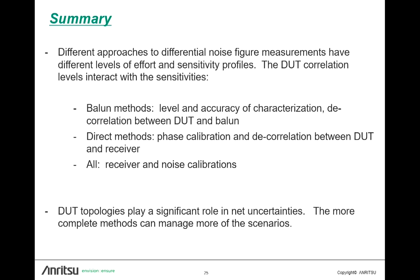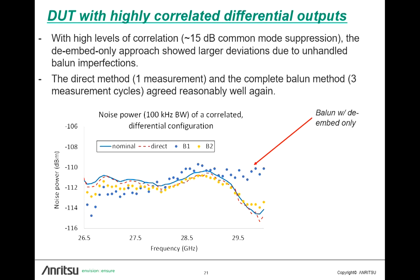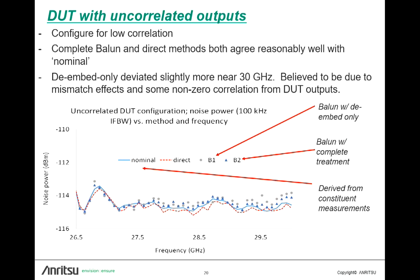During the Q&A, an audience member asked whether uncertainty bounds had been plotted for the different approaches — specifically whether the direct method's uncertainty bounds had been used to assess how well the other approaches compared. The speaker replied that device-specific uncertainties had been computed and at least for the complete balun and direct methods, they ended up being rather similar. A more complete uncertainty model is being worked on, and the speaker expressed interest in collaboration on that.